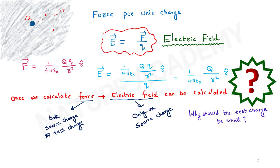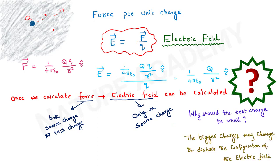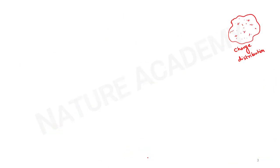Why should the test charge be very small? Bigger charges may disturb the configuration of the electric field. That is why the test charge should be very, very small. In some books you may find E-bar equals the limit as q tends to 0 of F-bar over q — meaning the test charge must be vanishingly small so it does not disturb the electric field of the source charge.